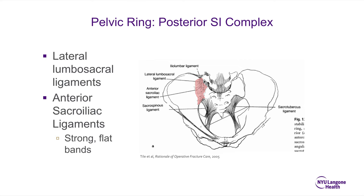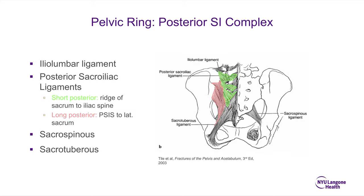The ligaments that stabilize the pelvic ring include the lateral lumbosacral ligaments and the anterior SI ligaments, which are strong flat ligaments found on the anterior SI joint. During an iliolumbar approach, you can easily identify these coursing from the ilium to the sacral ala. The posterior SI ligaments include short and long ligaments: the short posterior SI ligaments start at the ridge of the sacrum and course to the iliac spine, whereas the long posterior ligaments go from the PSIS to the lateral sacrum.